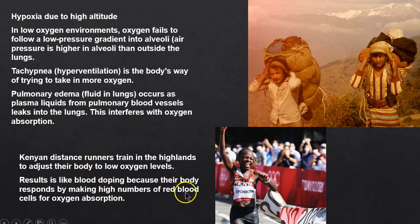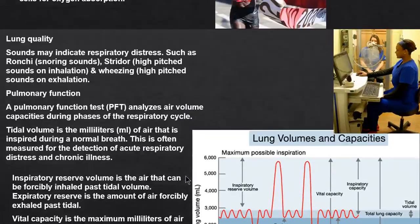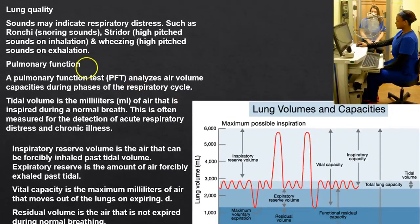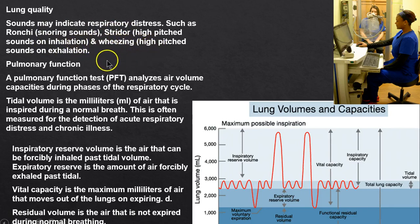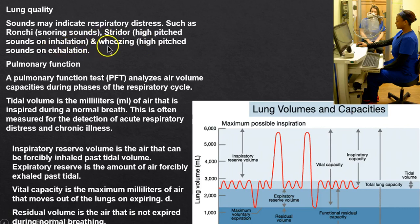Abnormal breath sounds: snoring sometimes occurs on inhalation; stridor is a high-pitched sound on inhalation; wheezing is on exhalation. Get those straight — stridor and wheezing can sound similar, but strider is on breathing in and wheezing is on breathing out.